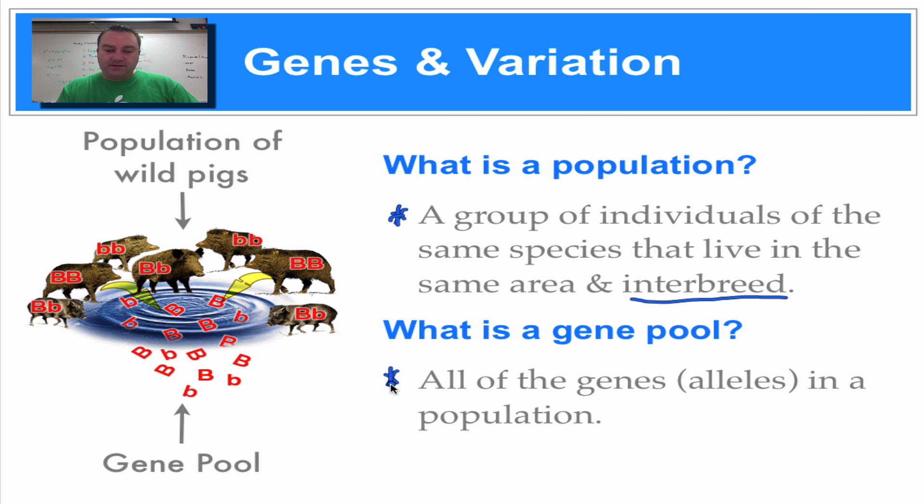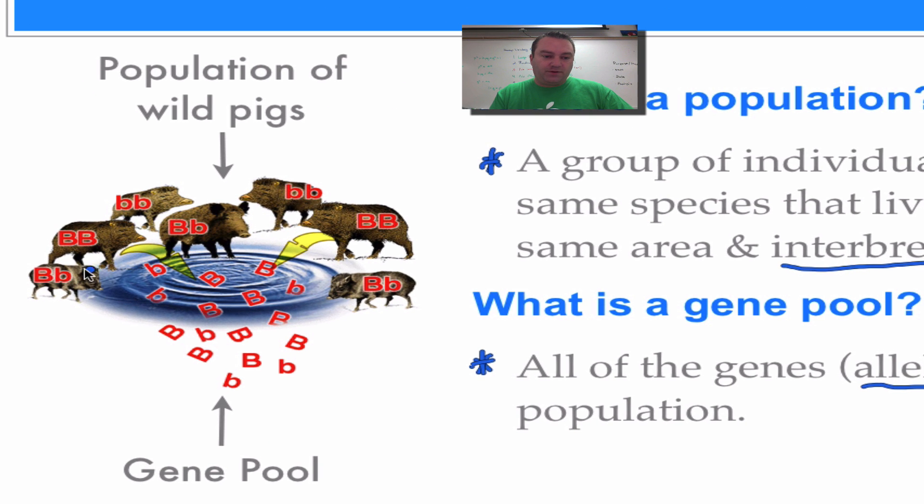Now, a gene pool, this is all of the genes. And remember, another name for genes is allele. Remember, allele, alternative form of a gene. These are all the alleles within that population. So I want you to look over here at this picture. Here we've got a population of wild pigs. And in this case, some of them are heterozygous, some of them are homozygous recessive, some of them are homozygous dominant, just like what you would expect within a population. Not everybody's of the same genotype.